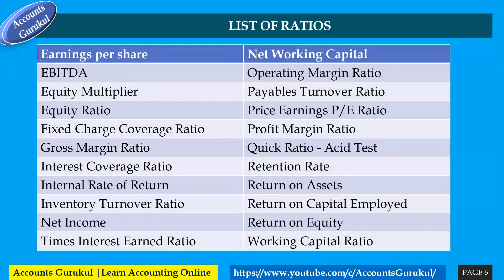Additional ratios include: earnings per share, EBITDA, equity multiplier, equity ratio, fixed charge coverage ratio, gross margin ratio, interest coverage ratio, internal rate of return, inventory turnover ratio, net income, times interest earned ratio, net working capital, operating margin ratio, payables turnover ratio, price-to-earnings ratio, profit margin ratio, quick ratio, acid test ratio, retention rate, return on assets, return on capital employed, return on equity, and working capital ratio. We will create more videos covering each ratio with actual financial statement examples.